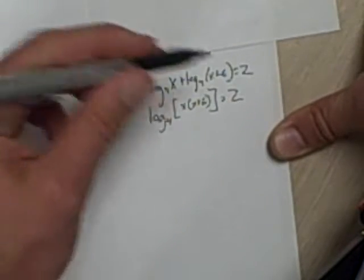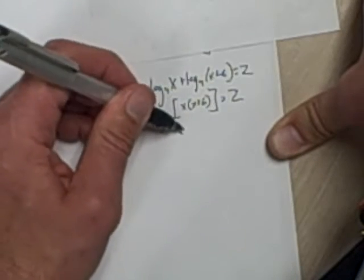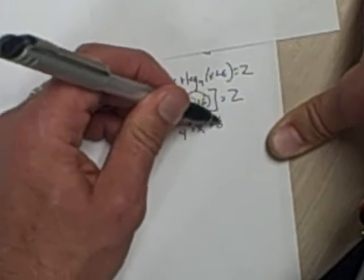Now that I have a single log statement, I can rewrite this as an exponent statement. So 4 to the second is equal to, I'm just going to distribute that right now, x squared plus 6x.